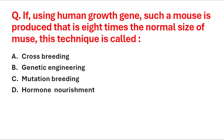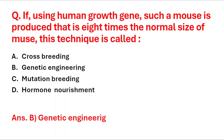Next question: if using human growth genes such a mouse is produced that is eight times the normal size of the mouse, this technique is called — A: crossbreeding, B: genetic engineering, C: mutation breeding, D: hormone nourishment. The right answer is option B, genetic engineering.